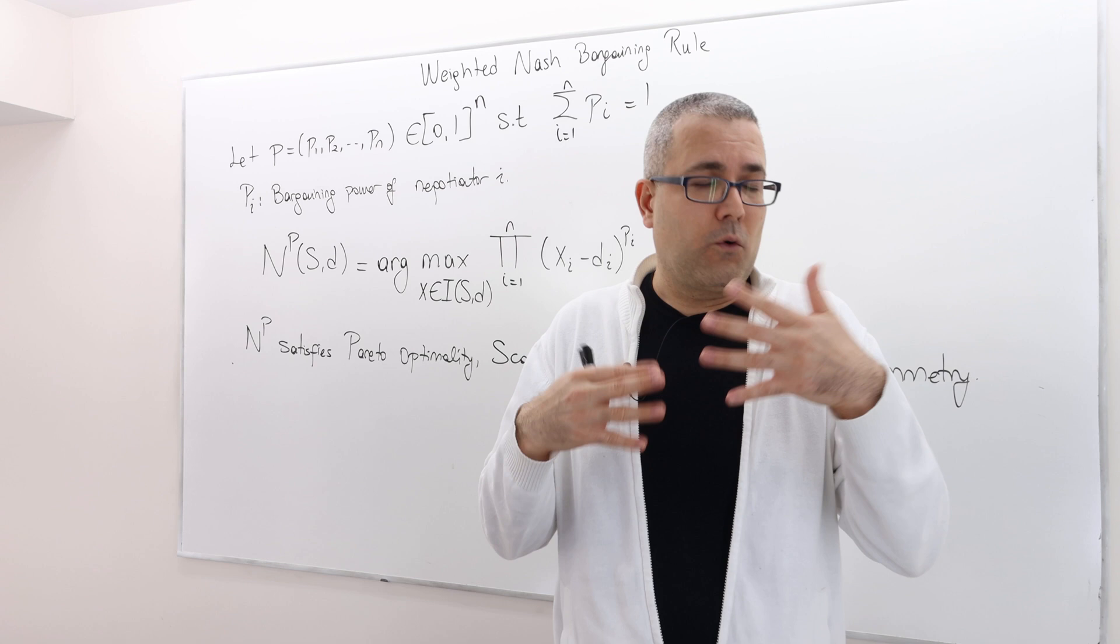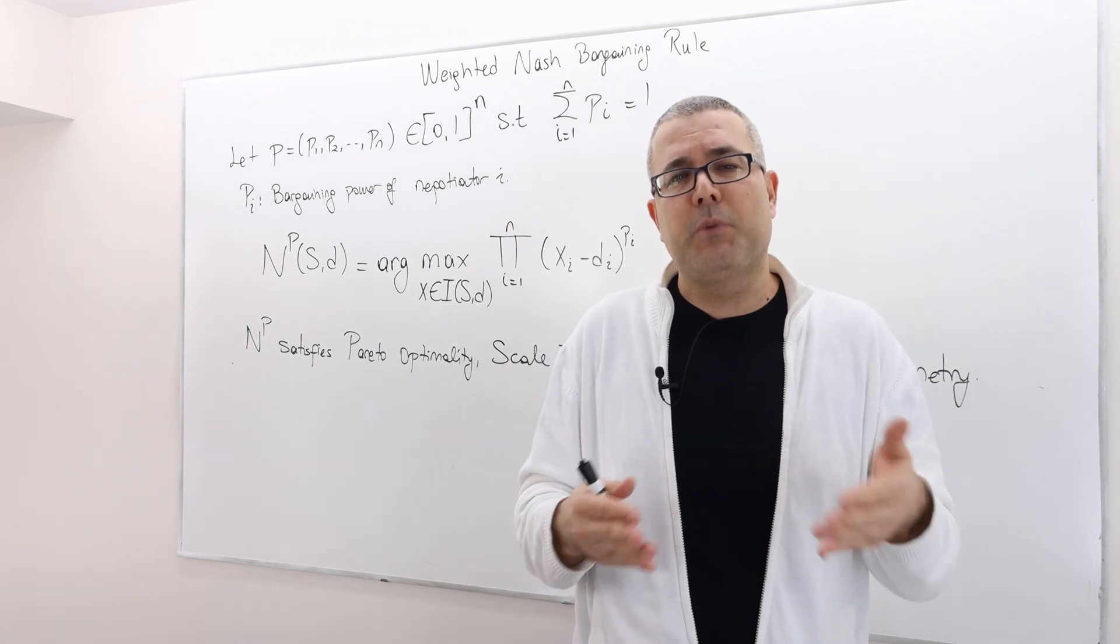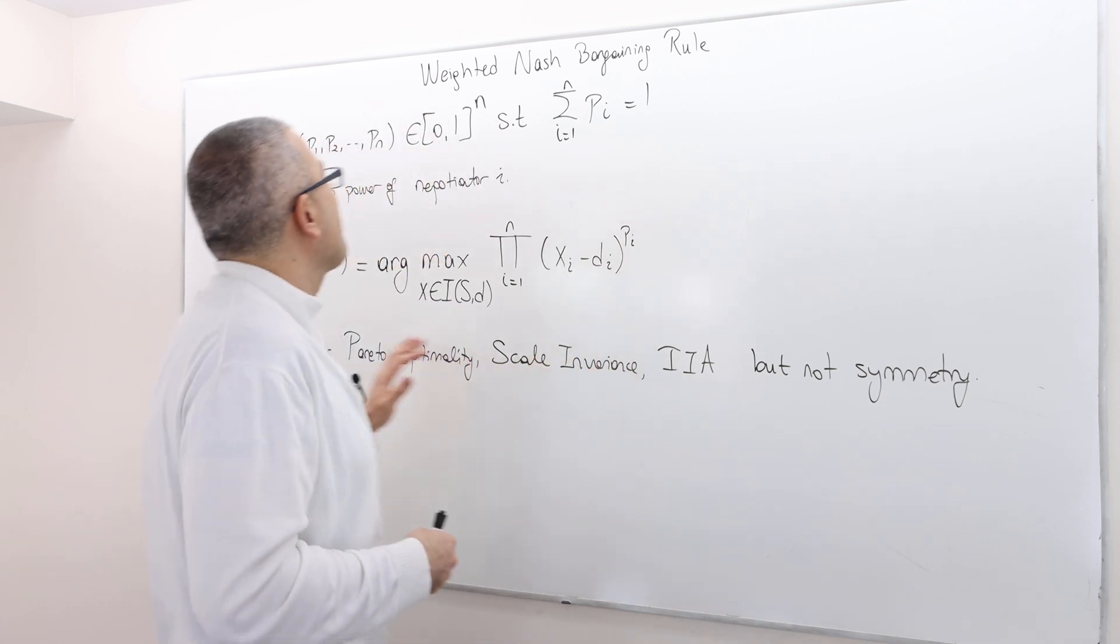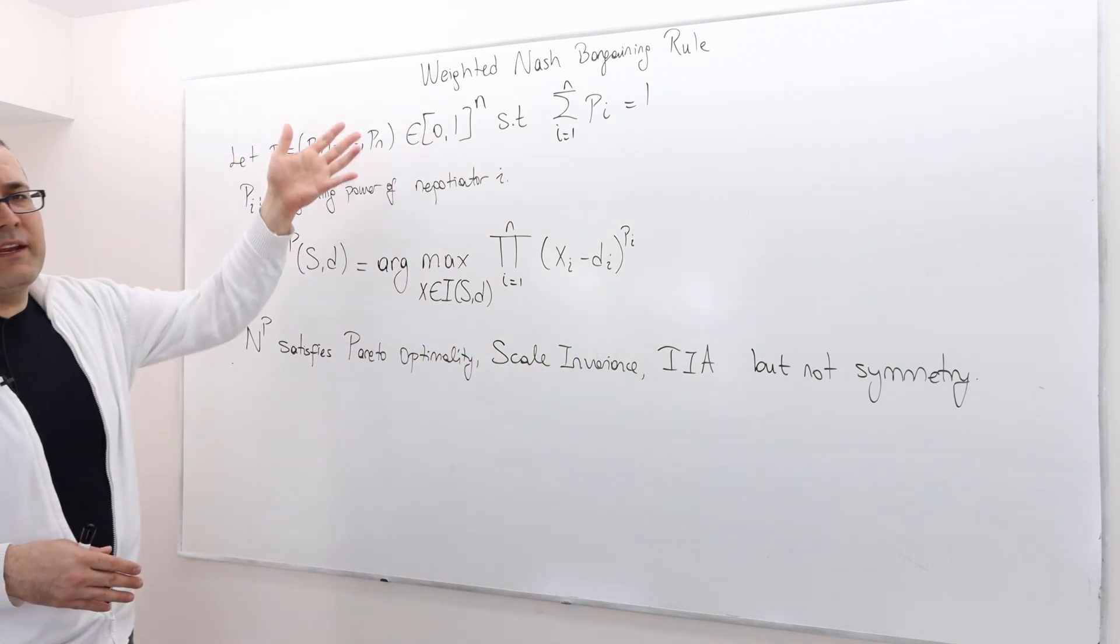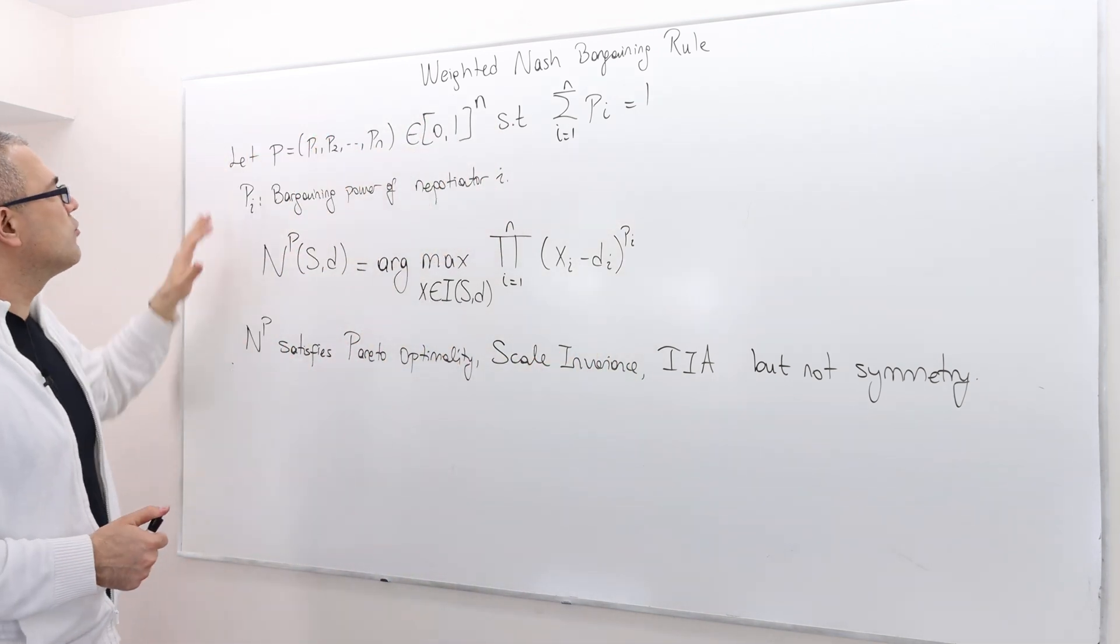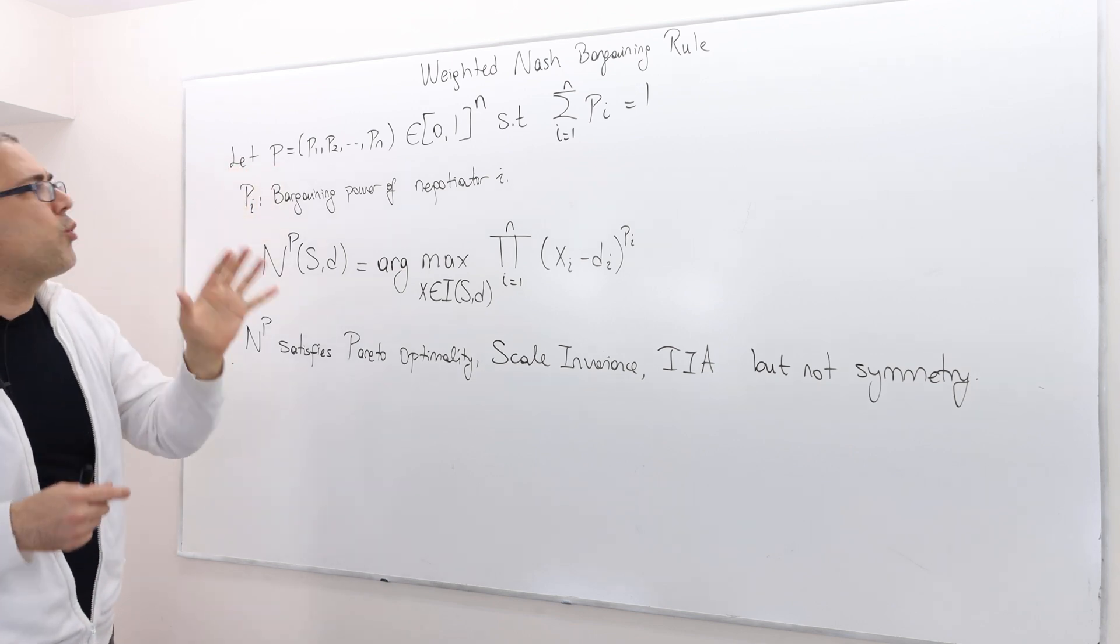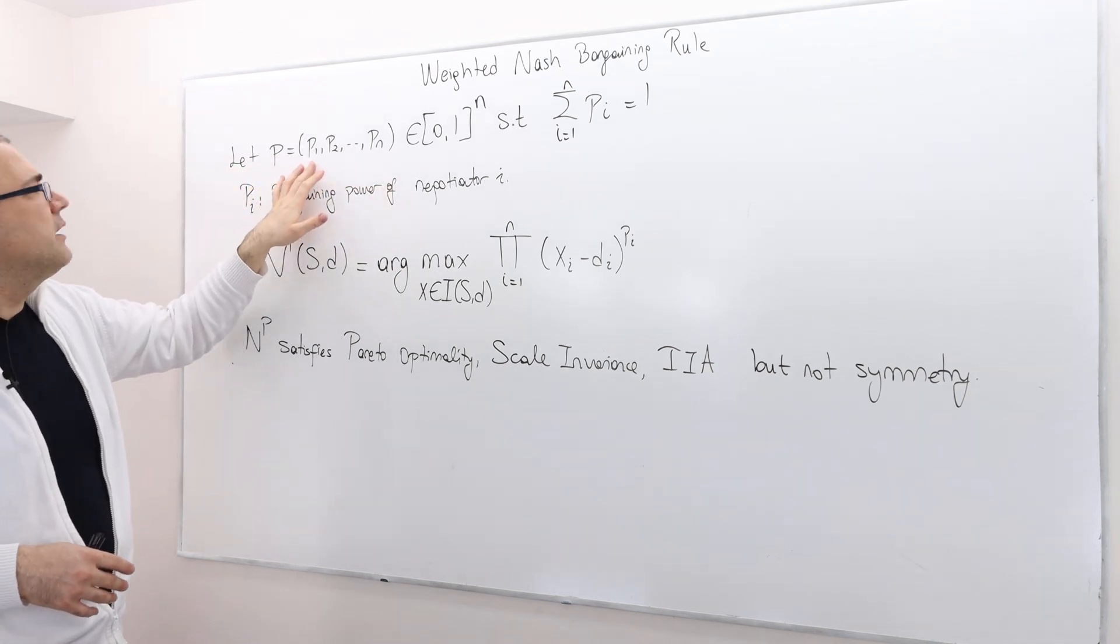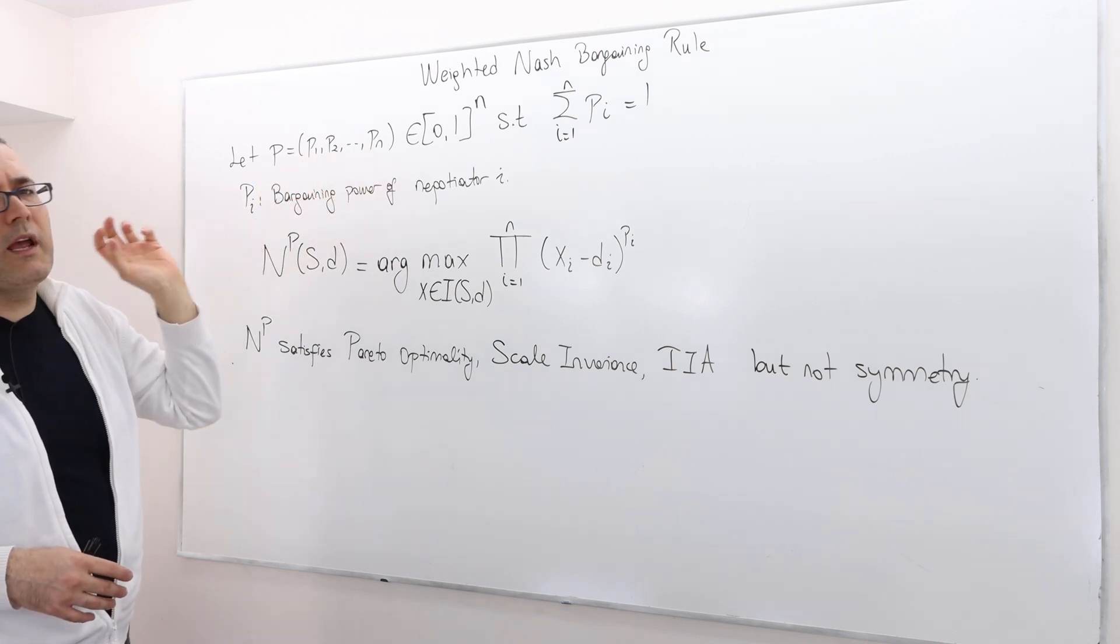Okay, so in that sense, or for that reason, using Nash bargaining rule is not really the best option. So it is called P-weighted or just weighted Nash bargaining rule. So P is the weight. It's basically a probability vector. So P1, P2, all the way up to Pn.